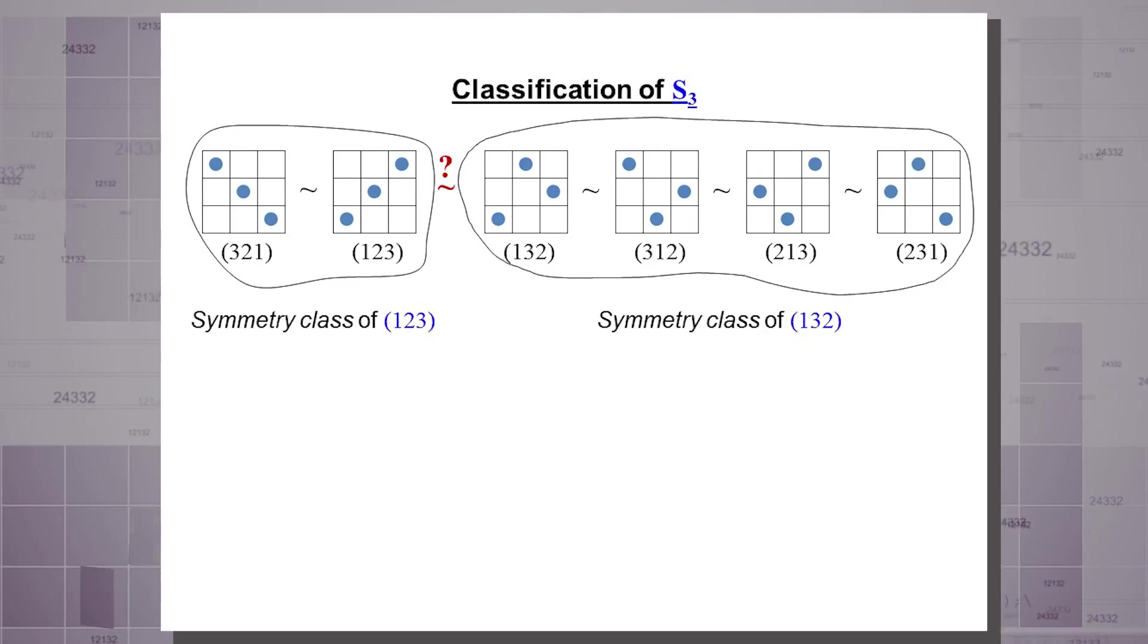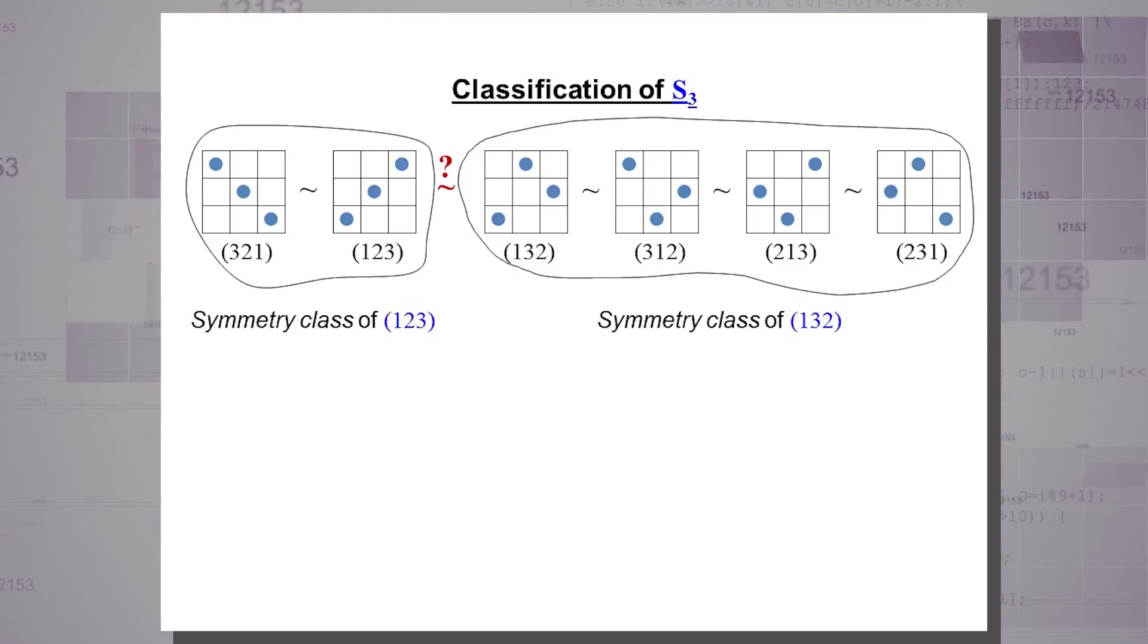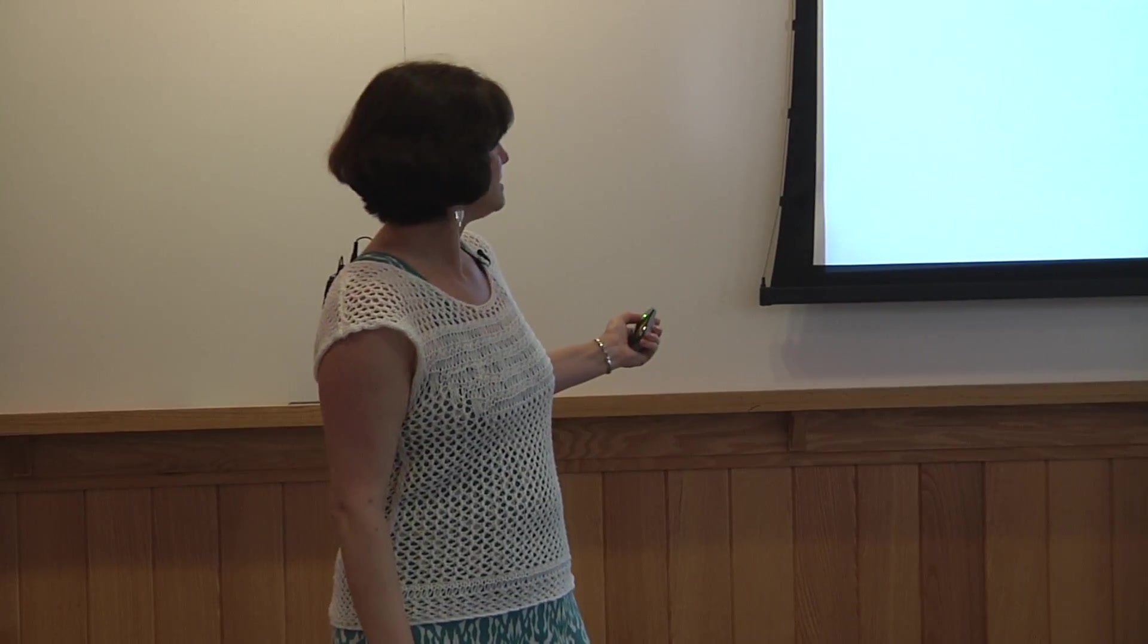So I will show you the first non-trivial case of classification for S3. In other words, if I take all permutations of length 3, which of them are Wilf equivalent and which are not. By the way, for homework, do S2. It is very simple after you understand S3. So in S3, you can start with 3, 2, 1. That's a non-attacking rook configuration of a 3 by 3 table. And you can also look at 1, 2, 3. Those two will be obviously Wilf equivalent. Why? Because if you have something large that avoids 3, 2, 1, what you can do is you can flip it and get something that avoids 1, 2, 3. And backwards. So whatever avoids 3, 2, 1, you can flip it and get something that avoids 1, 2, 3. So you will always be getting the same numbers on both sides. So those two by symmetry are Wilf equivalent.